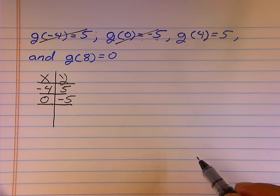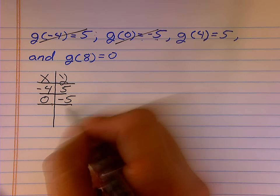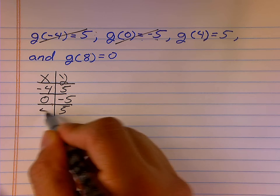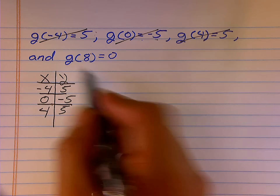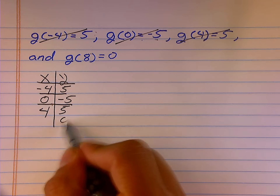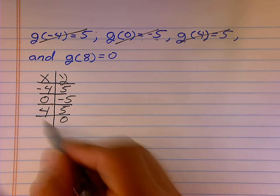So I'm done with my second set of information. The third one, y is 5 when x is 4. And last but not least, y is 0 when x is 8.